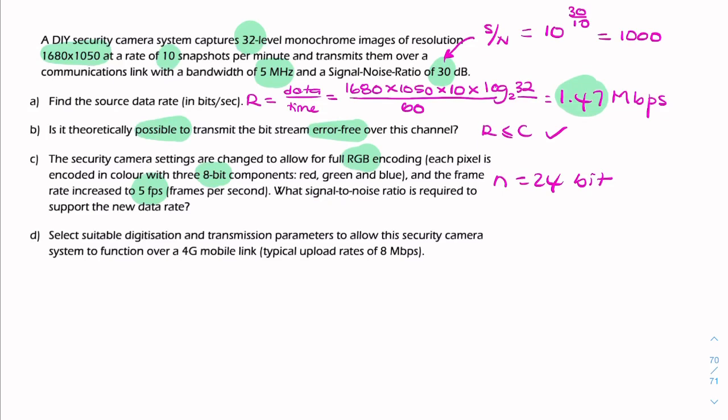So remember for questions like this what we want is R to be less than or equal to the channel capacity. We can calculate R in the same way that we did it up there. It's simply the resolution multiplied by the bit depth multiplied by the number of frames per second. So if you do that you get 211.7 times 10 to the power 6 and the channel capacity is B log 2 1 plus S over N and the question is to find the signal to noise ratio.